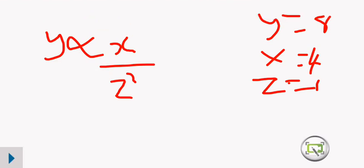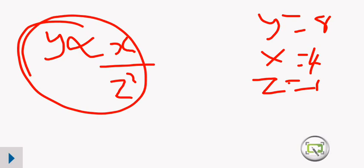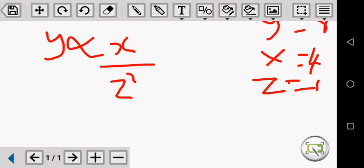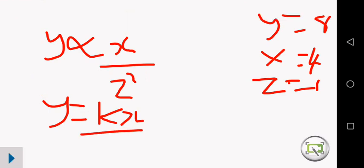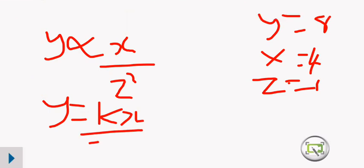So for this one, where is K? Let me show you where you're supposed to put K. Y is equal to KX over Z squared. Here is where you're supposed to put K. K means the constant of variation.